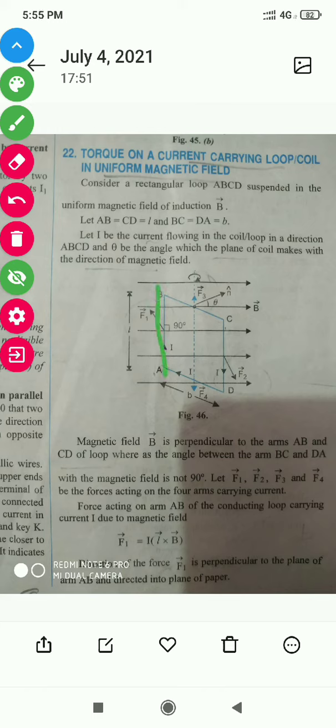The magnetic field makes a 90-degree angle with arms AB and CD, but it makes some angle theta with arms BC and DA.